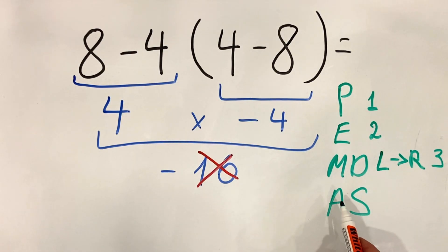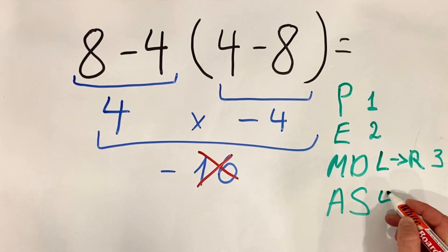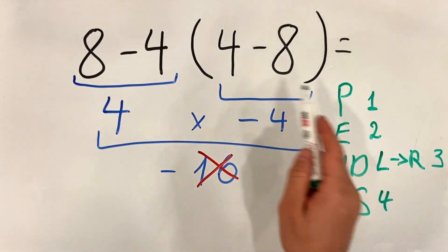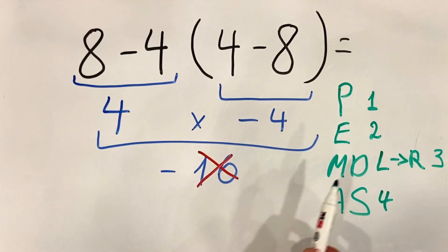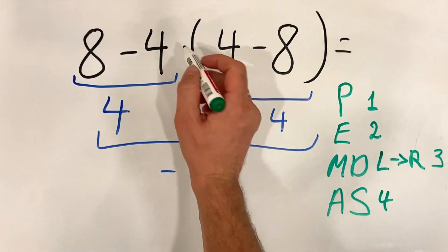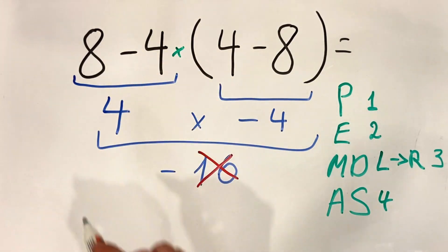And at the end we have addition or subtraction. In our case, we first must do what's inside the parentheses, so four minus eight. Then we don't have exponents. Then we'll do the multiplication that we have here.